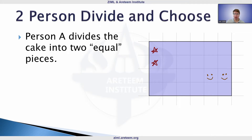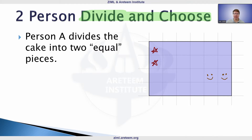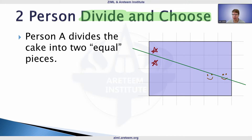Let's think about this method called the two-person divide and choose method. This actually dates back to the Book of Genesis in the Bible, so it's not a new idea. The general goal is that person A divides the cake into two equal pieces. In our example, person A really likes the stars and smiley faces, so they try to divide the cake accordingly.